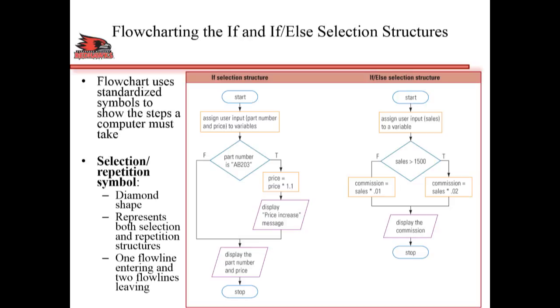When you do something in the program, like assign some input to variables or do some math, the flowchart symbol is a rectangle. If you do some sort of output, it's a parallelogram, which you can see in the display sections.